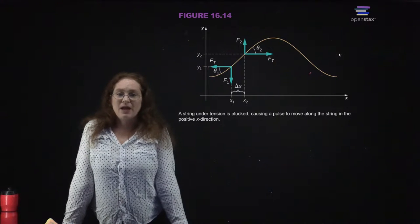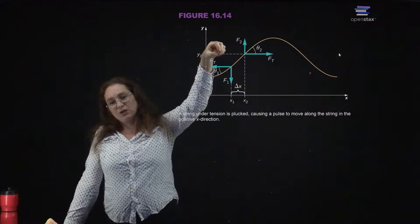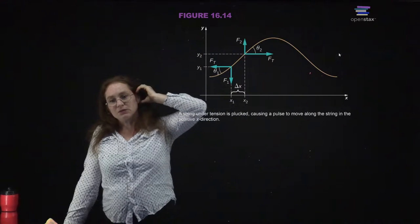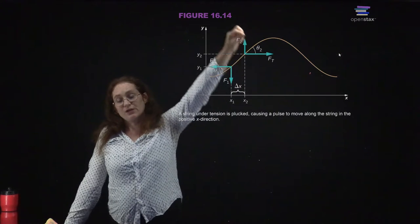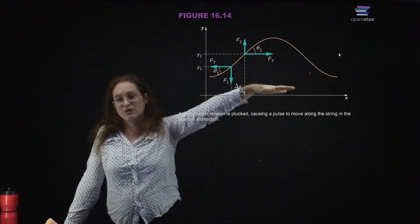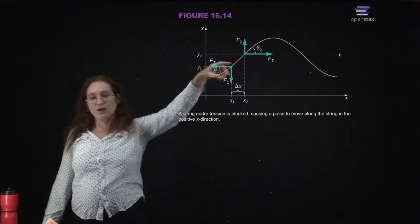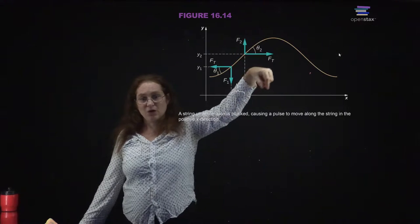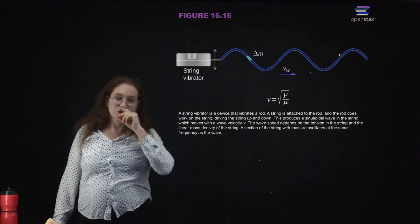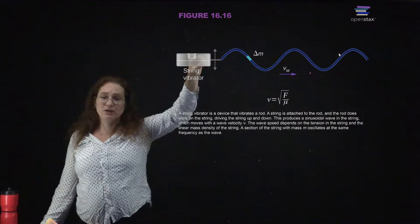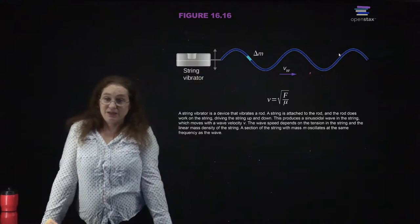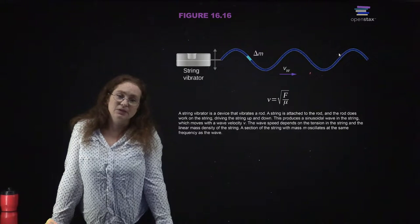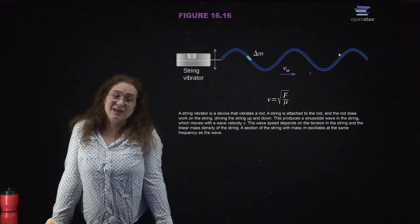When you pluck the string, you end up with different forces on the string depending on where you are. You're physically causing displacement from the equilibrium position, and you get a restoring force so that anywhere along the string, there is a force which wants to make it return to being a straight string. In a lab, you can use a string vibrator that wiggles the string so you can see the displacement along the string.